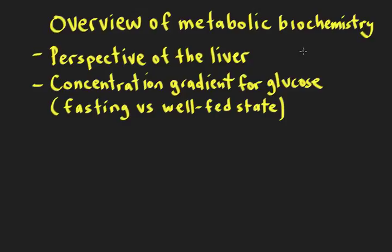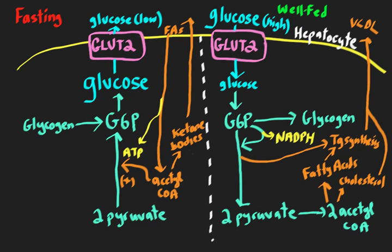Thinking about the liver, we want to think of a schematic that looks like this. You can see here that I have a liver cell — it looks complicated, but we're going to break it down step by step. This liver cell is divided in half because the left side is what's going on in the liver during the fasting state, when you're not eating and glucose is low.